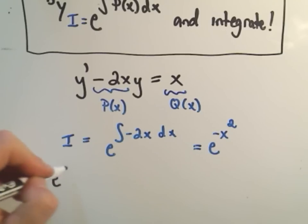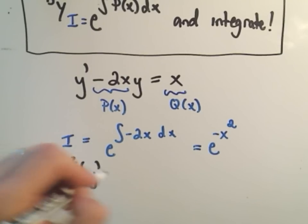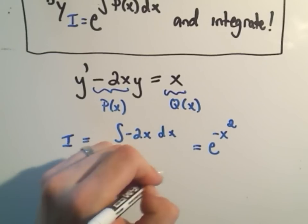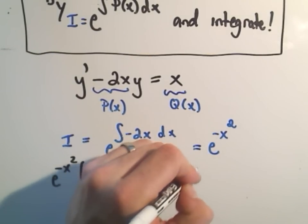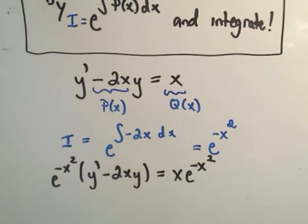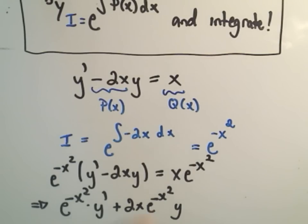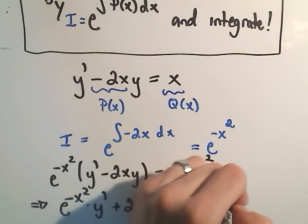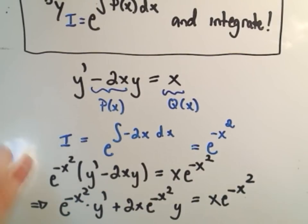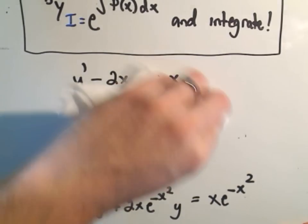So on the left side I'm going to get e to the negative x squared times y prime minus 2xy. And then this will be equal to x times e to the negative x squared. And what we have to do now is integrate both sides. Notice if we multiply this out the left side too we'll get e to the negative x squared times y prime plus 2x e to the negative x squared y. And the right side we'll leave alone, x e to the negative x squared.